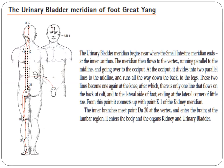These two lines become one again at the knee, after which there is only one line that flows on the back of the calf and to the lateral side of the foot, ending at the lateral corner of the little toe. From this point, it connects up with Kidney 1 of the kidney meridian.